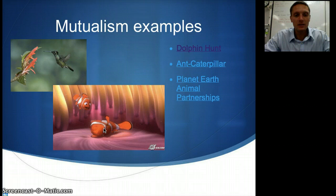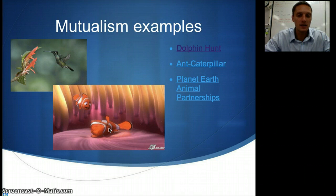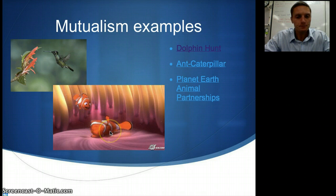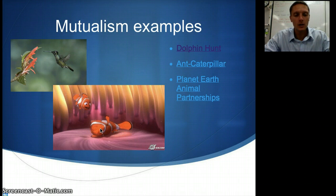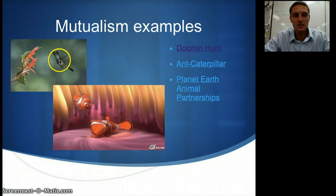The clownfish lives inside the sea anemone. The sea anemone has tentacles that are actually poisonous and provide a sting to other organisms. The clownfish is immune to that sting, so it's not affected by it. The sea anemone provides protection to the clownfish, like Nemo and Marlin. In turn, the clownfish provides food for the sea anemone through little droppings it leaves. Another good example is the interaction between birds or insects and plants.